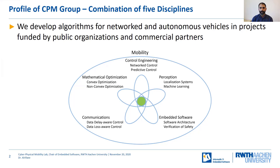In the group, we focus on the intersection of five disciplines in mobility. Those are control engineering, mathematical optimization, and communications, which together make network control. Additionally, we develop a service-oriented software architecture which can be used for implementing network control. Furthermore, in the field of networked and autonomous vehicles, you always need to consider the perception system — we focus in this field on localization systems.